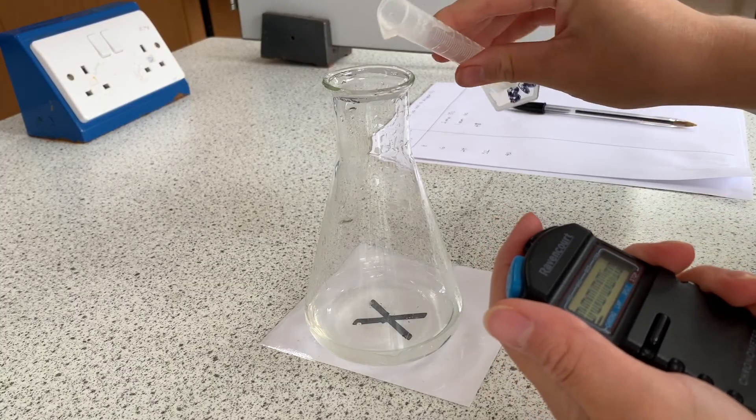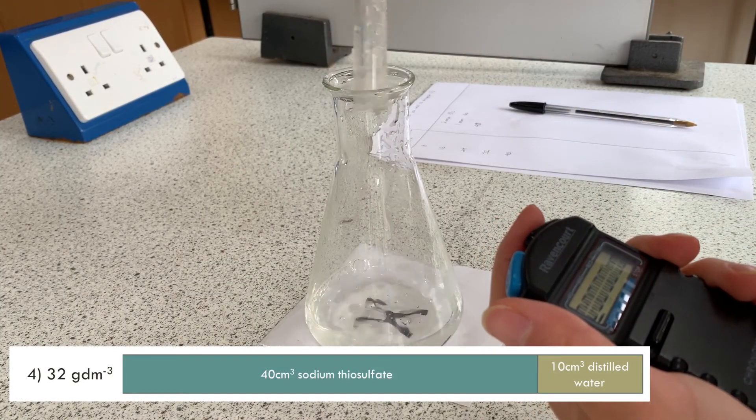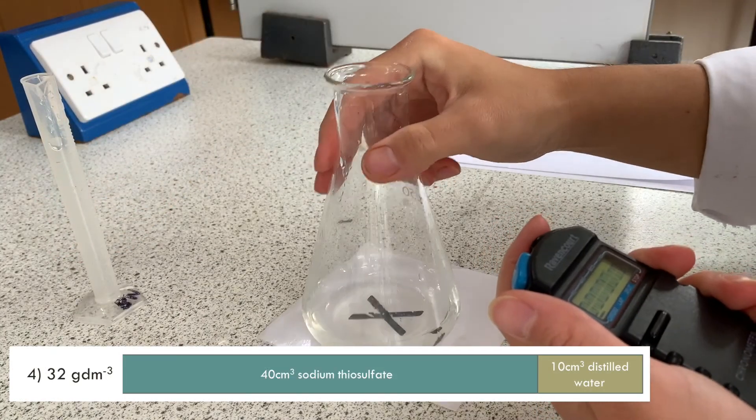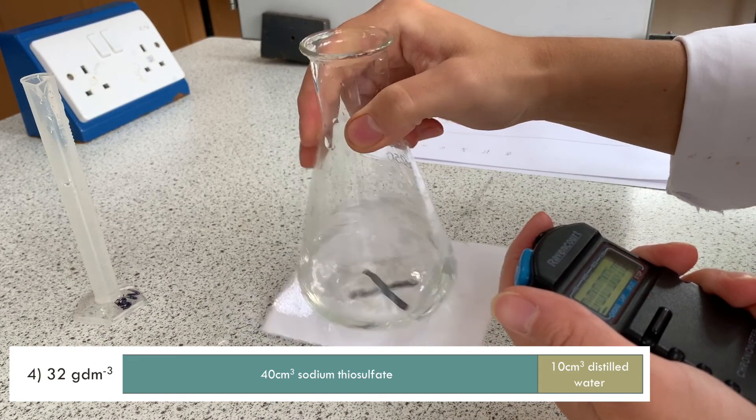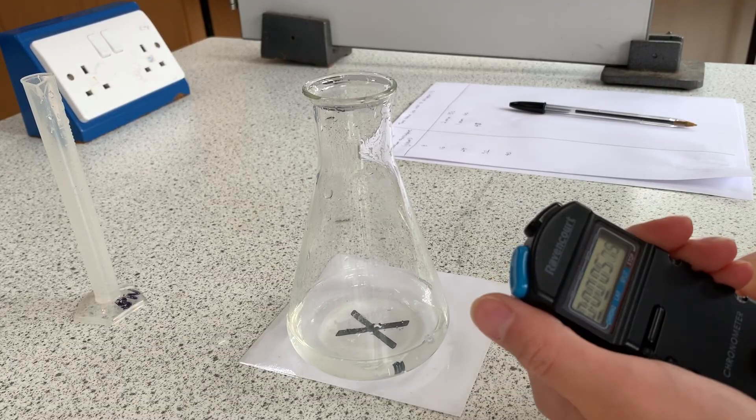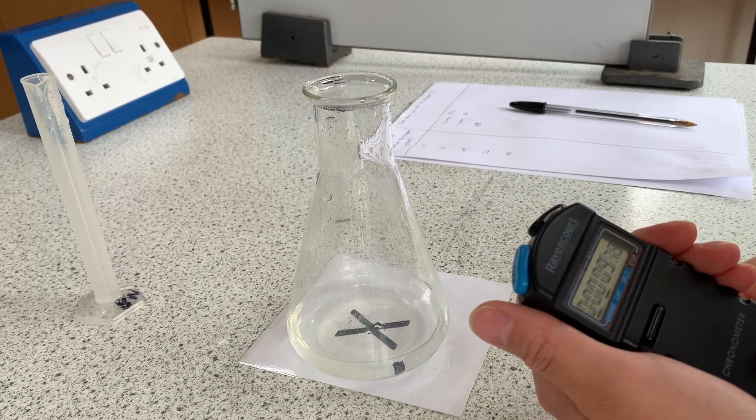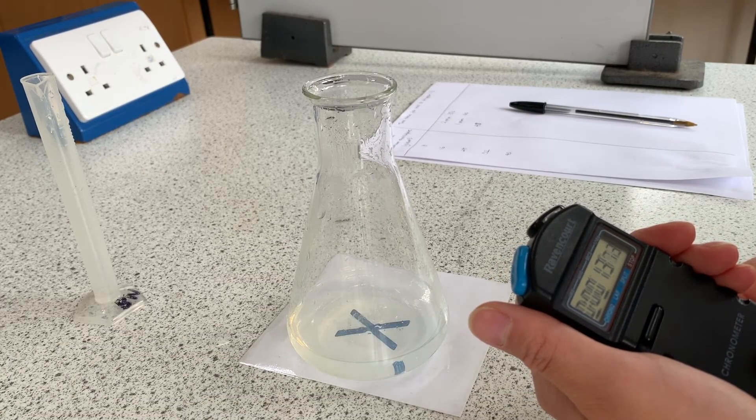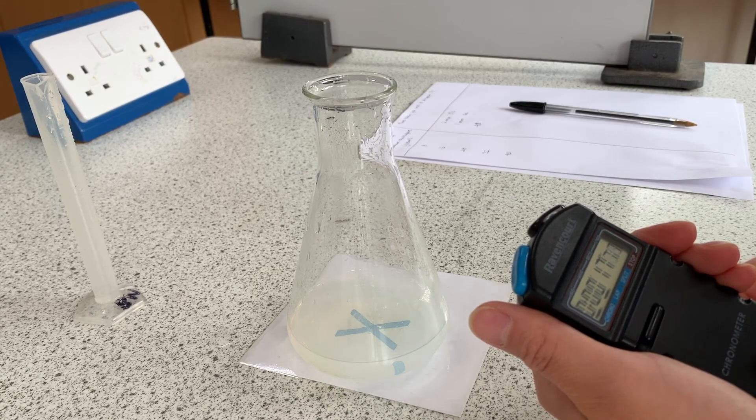Here is the reaction with the 32 grams per decimetre cubed solution. This was made by mixing 40 centimetres cubed of sodium thiosulfate with 10 centimetres cubed distilled water. Again, 10 centimetres cubed of hydrochloric acid was added and the reaction mixture was swirled whilst the clock was started.